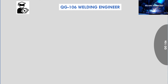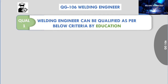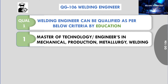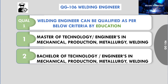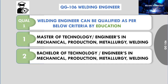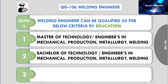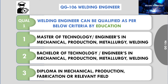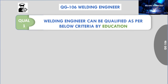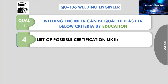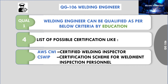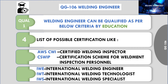A welding engineer can be qualified by education through the following criteria: M.Tech or M.E. in Mechanical, Production, Metallurgy, Welding, or a related field; B.Tech or B.E. in Mechanical, Production, Metallurgy, Welding, or a related field; or a Diploma in Mechanical, Production, Fabrication, or a relevant field. Qualification by education may also include possible certifications such as AWS CWI, CSWIP, IWE, IWT, and IWS.